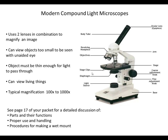Some basic information about compound light microscopes: they derive their name from using two lenses in combination to magnify an image. We have a lens in the ocular or eyepiece, and then a lens in the objectives, and those two lenses together work in combination to produce a greater total magnification. Modern compound light microscopes allow us to view objects too small to be seen with the unaided eye. The microscopes we'll use in class magnify anywhere from 40 times up to about 400 times.